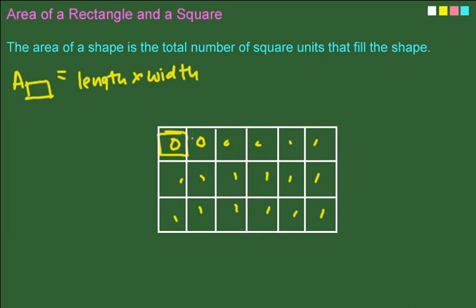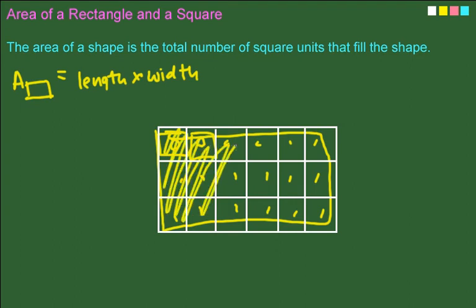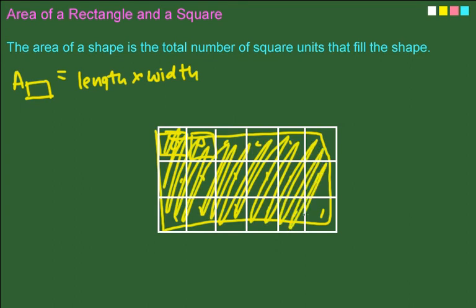there are 18 little boxes like this that make up this big rectangle, which means inside this rectangle there's a total of 18 square units. Do you see that? Here, look.